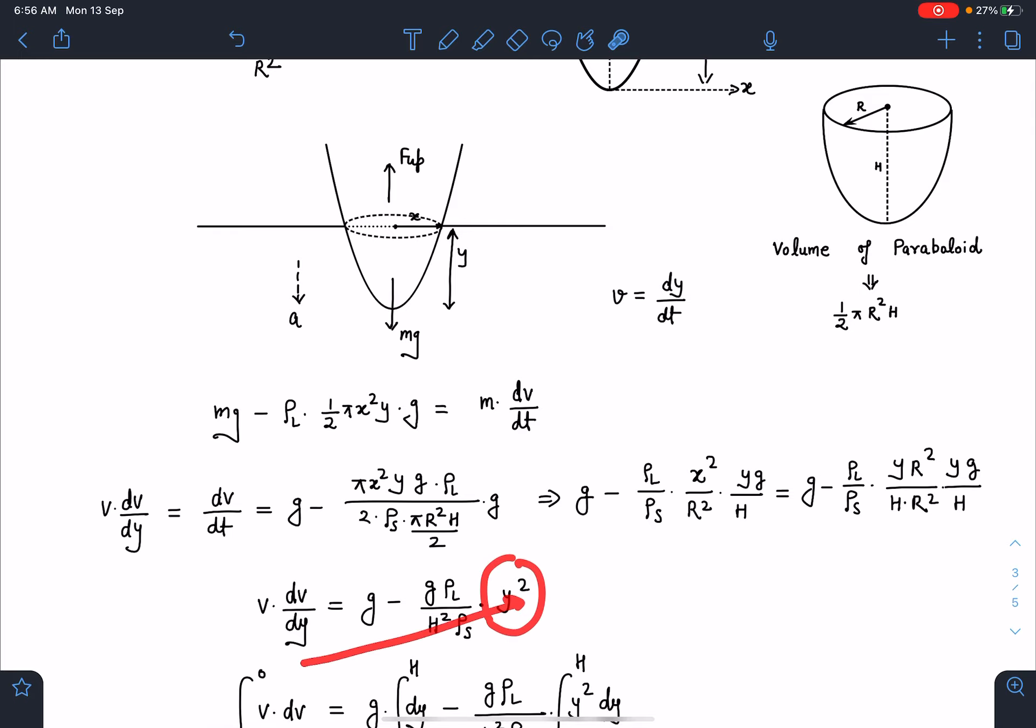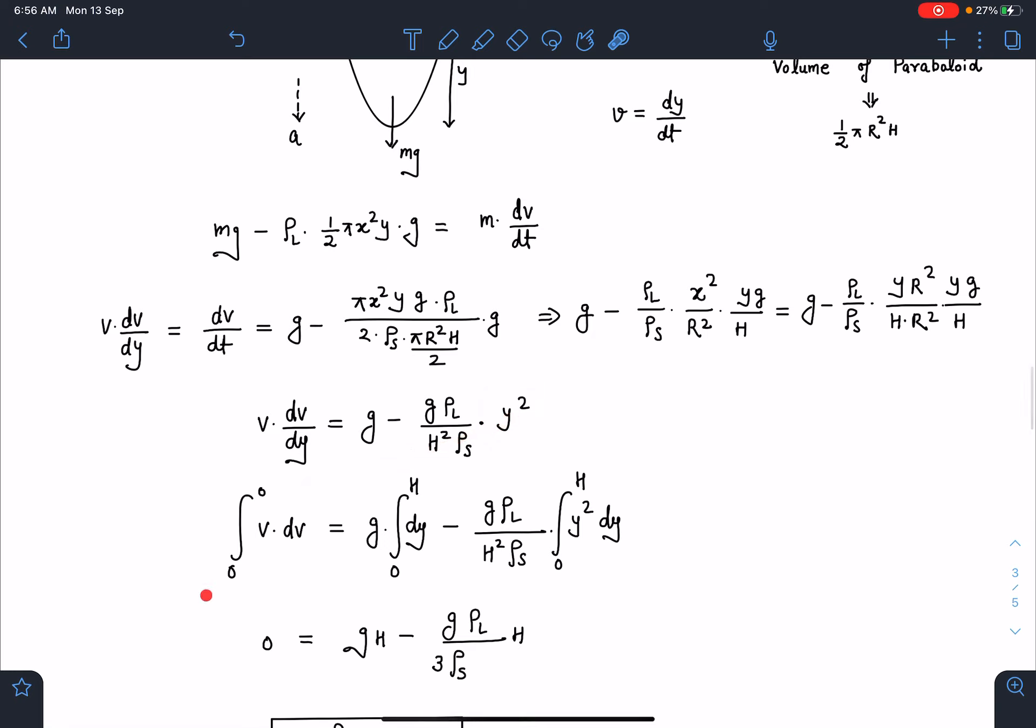Now I will take this dy this side and integrate since velocity goes from 0 to 0. Right initial velocity is 0 and finally again it comes to rest. Y value goes from 0 to H minus g rho l by h square rho s will be outside the integral because it is constant and we will be having here y square dy. So 0 to H.